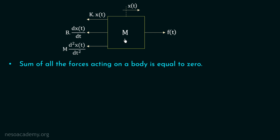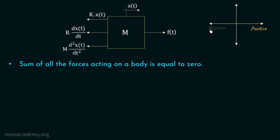We are now in a position to write the equation of motion, but note that some forces are acting to the right hand side and some to the left hand side. So we need to establish a sign convention. In this sign convention, if a force is directed to the right hand side, we will take that force as positive, and if a force is directed to the left hand side, we will take that force as negative. Similarly, if a force is going upwards it is positive, and if downwards it is negative. We will use this sign convention in solving all problems of translational mechanical systems.